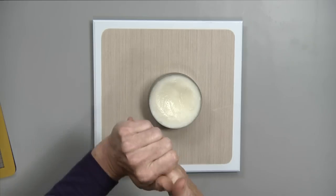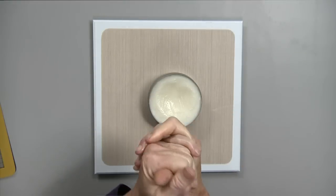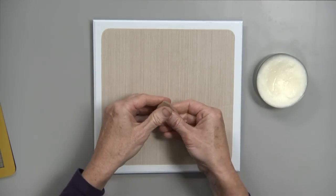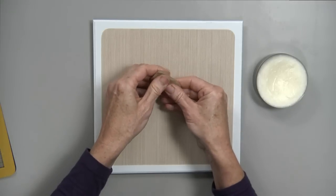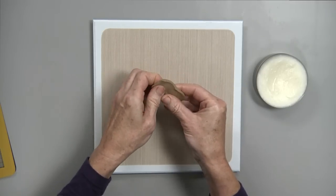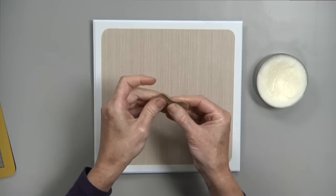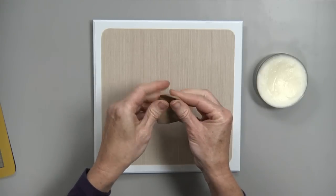The first thing I do is condition both my hands and my clay with our product called Slick. This will keep the clay from sticking to my hands and adding it to the clay gives it a much nicer texture and it doesn't dry out nearly as quickly and it just seems to work much better this way.